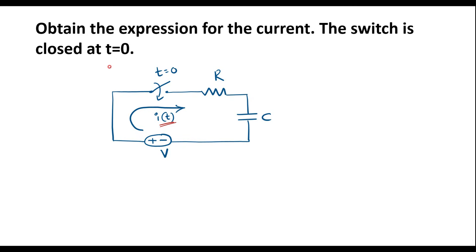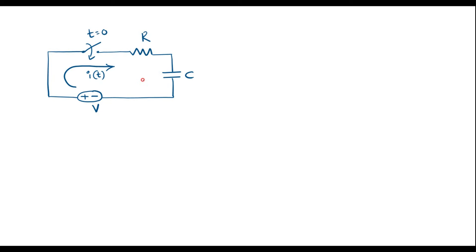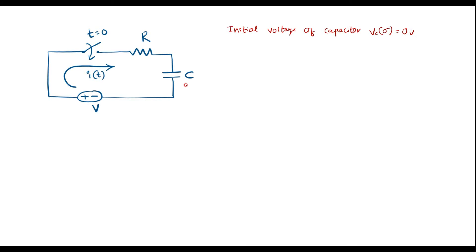The switch is closed at T equal to 0. For easy simplification, I will represent this circuit in S domain. First, we will assume that initial voltage of the capacitor is 0, that is Vc of 0 minus is equal to 0. This is an assumption.